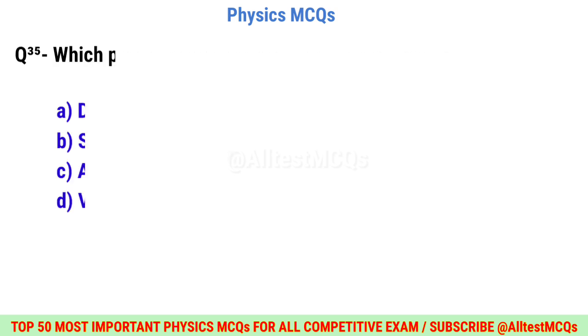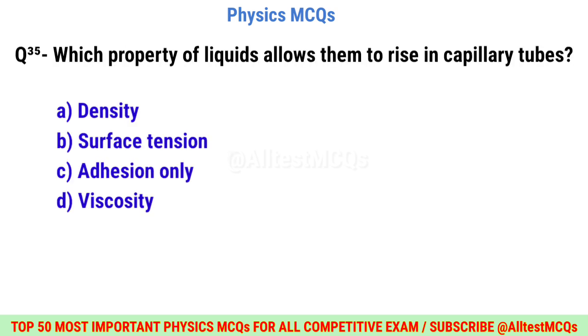Question number thirty-five: Which property of liquids allows them to rise in capillary tubes? Correct option is B: Surface tension.